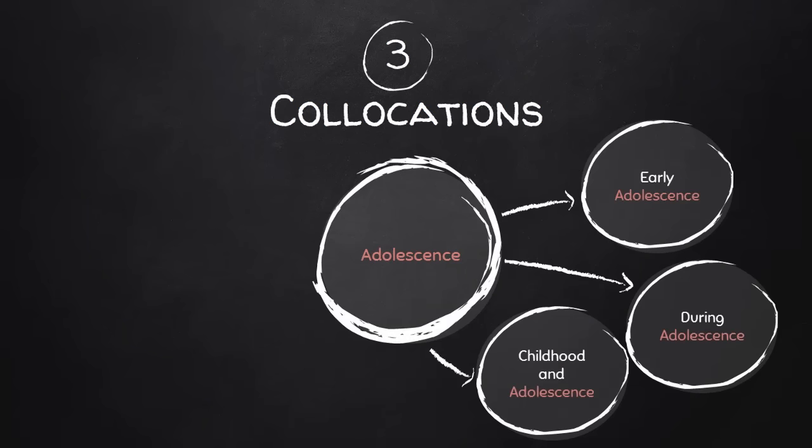Collocations for adolescence: we have early adolescence — like 13, 14, or 15 years old. During adolescence. And childhood and adolescence — adolescence is a good comparison word for childhood. You have childhood, adolescence, adulthood.